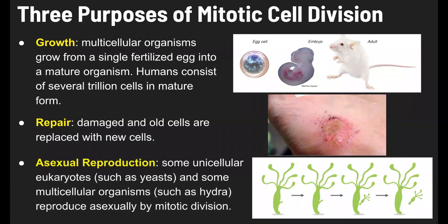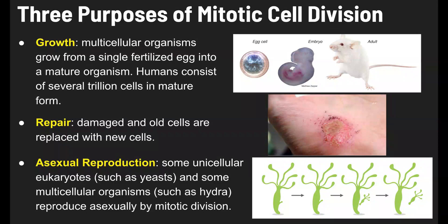The third purpose is asexual reproduction, which is contrasted with sexual reproduction. Sexual reproduction involves some type of female gamete and male gamete — in humans, an egg cell and a sperm. But asexual reproduction doesn't involve male or female gametes at all. Instead, there's just a kind of budding or division happening.